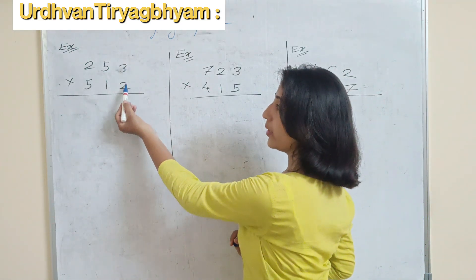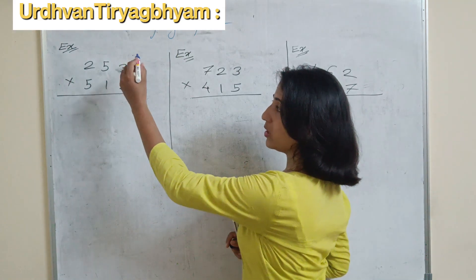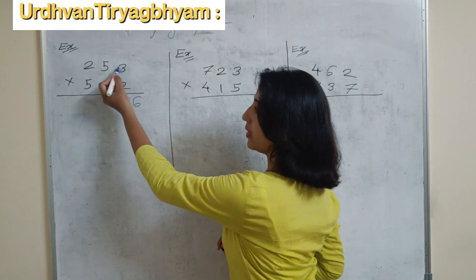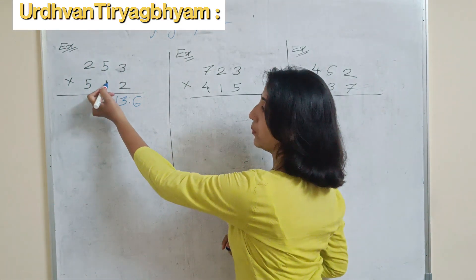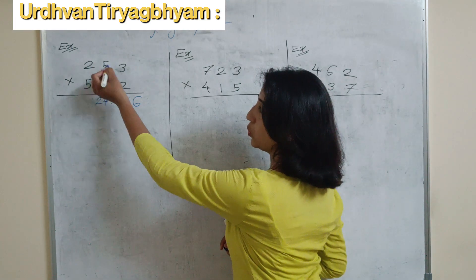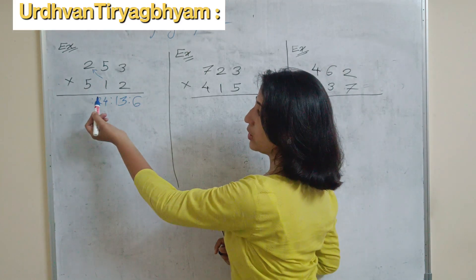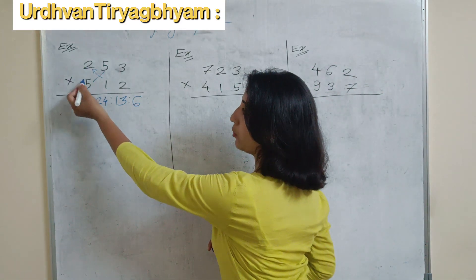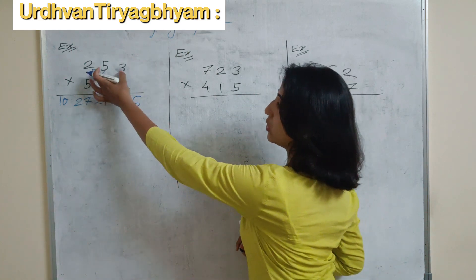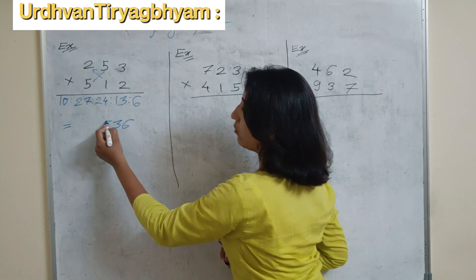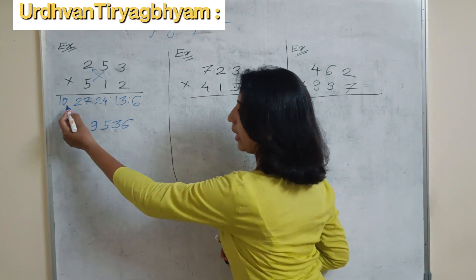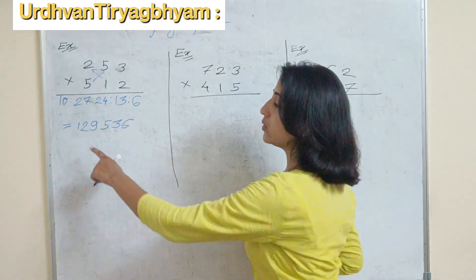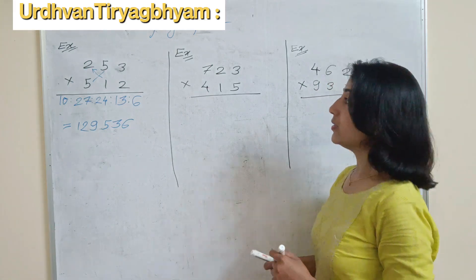So what is the vertical cross method? First, take the product of the unit place numbers: 3 into 2 is 6. Then cross product gives 10, and 10 plus 3 is 13. Then applying cross, cross, and the vertical product: 4 plus 15 is 19, and 19 plus 5 is 24. Then cross: 1 into 2 is 2, and 5 into 5 is 25 — so 2 plus 25 is 27. Next vertical product: 2 and 5 is 10. The final answer gives digits 1, 2, 9, 5, 3, 6.